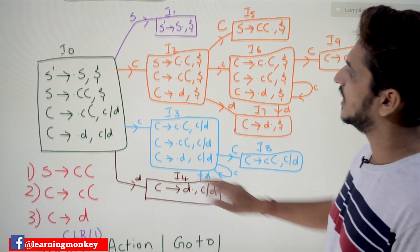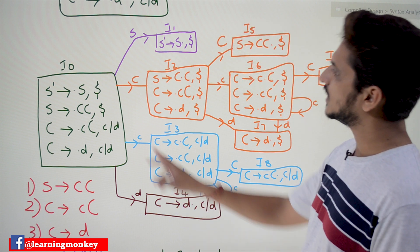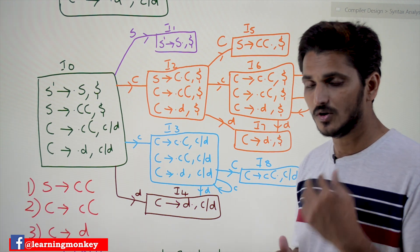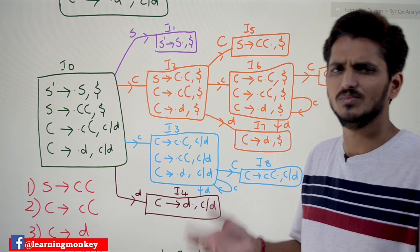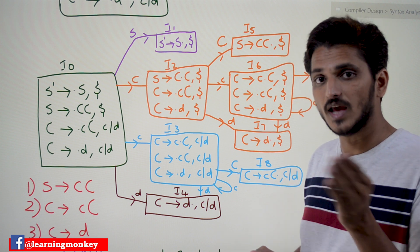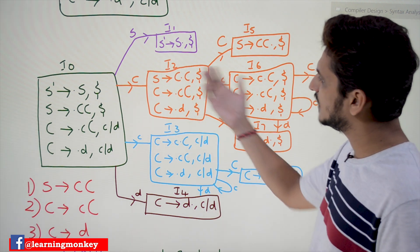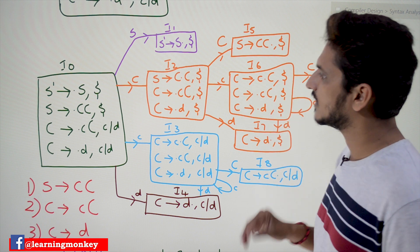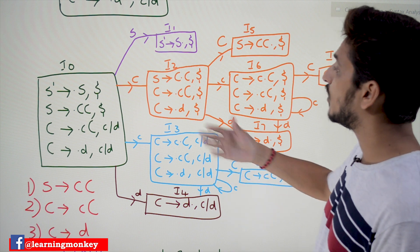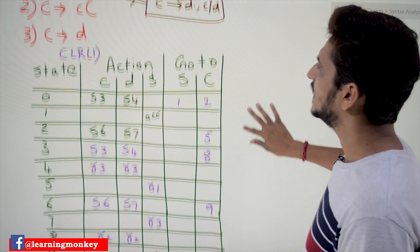These are the item generations. We constructed these states in our previous class — total 10 states are there. Each state is taken and we have to construct the table for it. This is very much similar to the SLR(1) and LR(0) table construction — same, similar, there is no change — but we have to construct it for canonical LR(1).